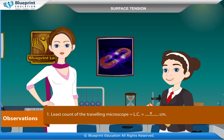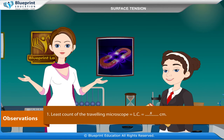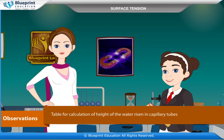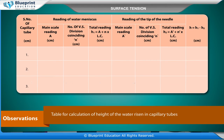Observations: The least count of the travelling microscope is LC = x cm. Table for calculation of height of water risen in capillary tubes — columns include: serial number of capillary tube, reading of water meniscus (main scale reading A cm, total reading H1 = A + N × LC cm), reading of the tip of the needle (main scale reading A', number of VS divisions coinciding N', total reading H2 = A' + N' × LC cm), and H = H1 − H2 cm.